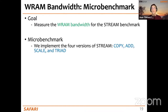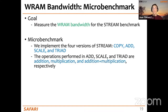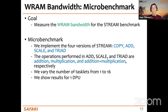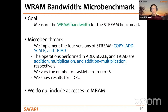STREAM has four different versions: copy, add, scale, and triad. The operations performed in scale and triad are multiplication, and multiplication plus addition, respectively. In our experiments, we vary the number of tasklets from 1 to 16 and show results for one DPU. In these experiments, we do not include accesses to MRAM so as not to introduce noise into the WRAM bandwidth measurement.